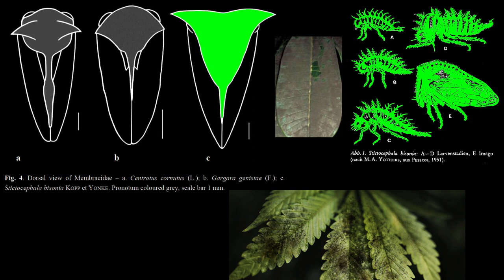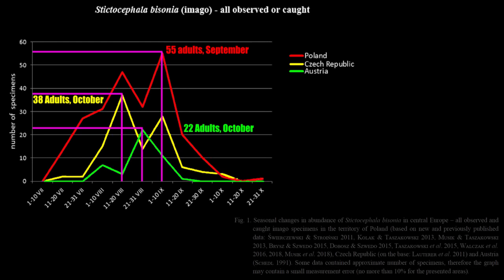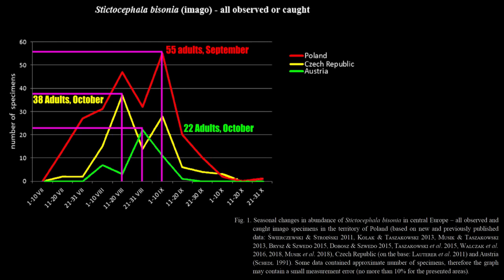Stictocephala bisonia is a generalist that produces one generation of about 100 eggs per female per year that hatches around April and dies off around October.